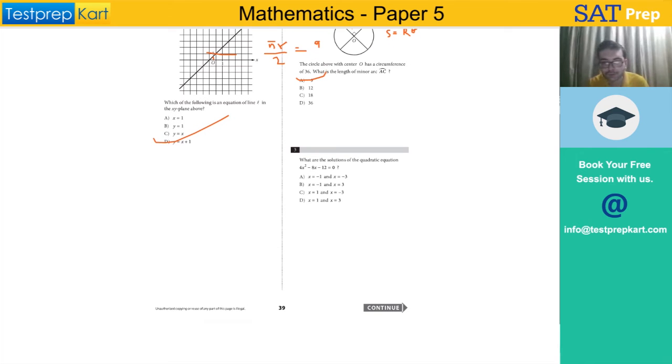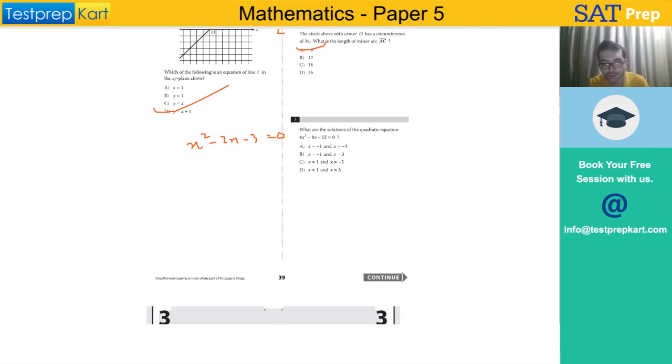What are the solutions of this quadratic equation? Here I can take 4 common, giving us x² - 2x - 3 = 0. We can do middle term factorization: x² - 3x + x - 3 = 0. This becomes x(x - 3) + 1(x - 3) = 0, so (x + 1)(x - 3) = 0. Therefore x = 3 and x = -1. The answer is B.